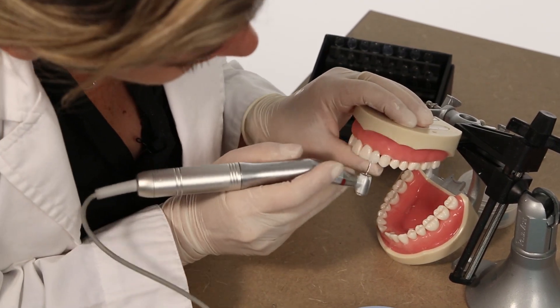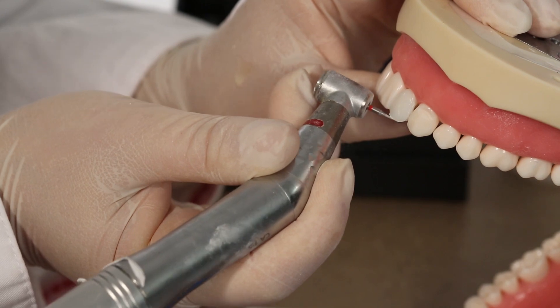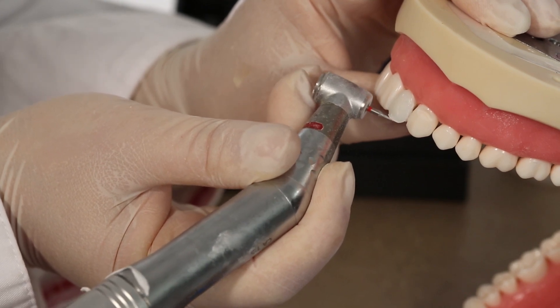In the final step, remove excess composite from the periphery with an extra fine finishing burr, taking care not to touch the glossy finish of the veneer.